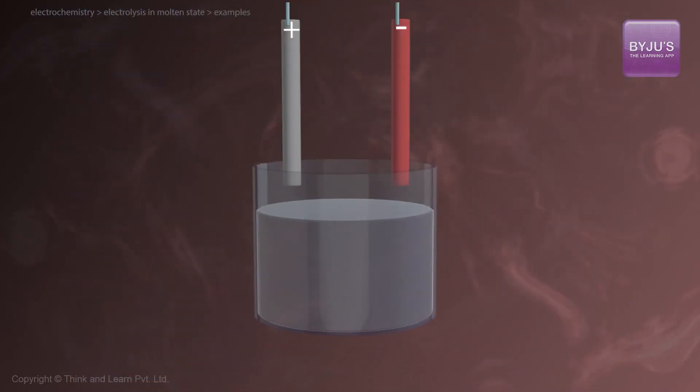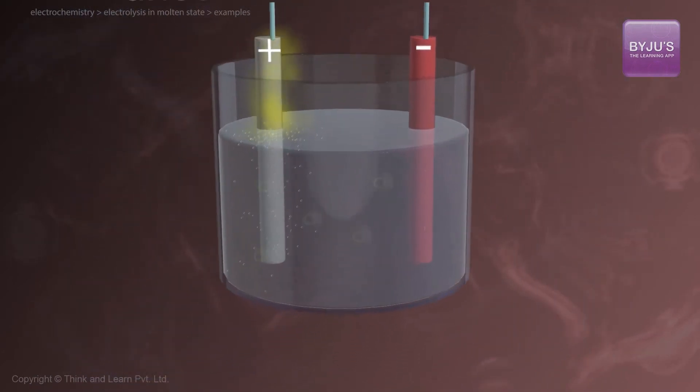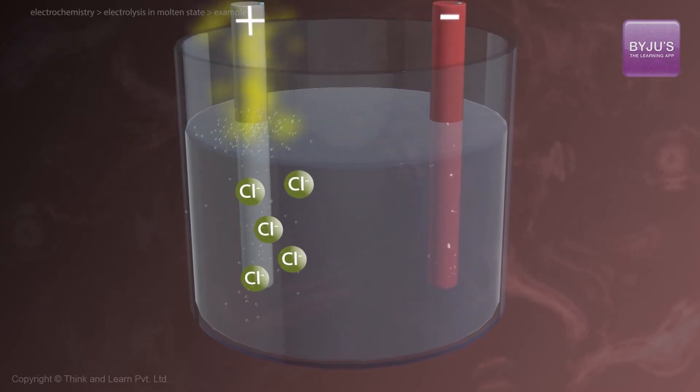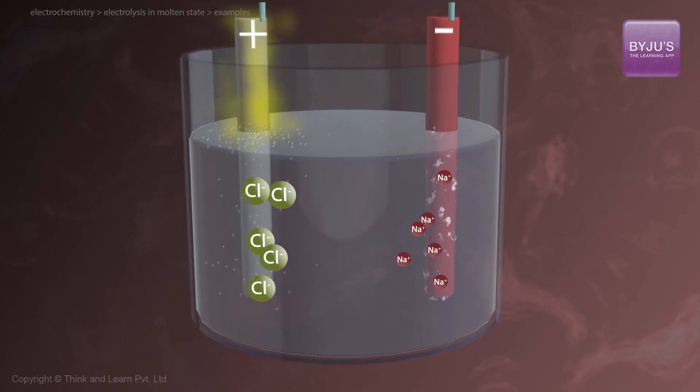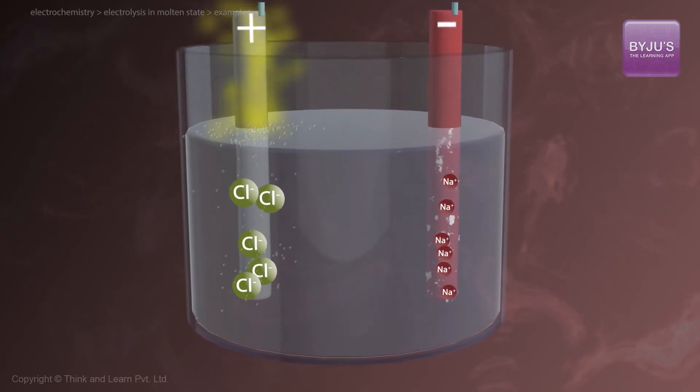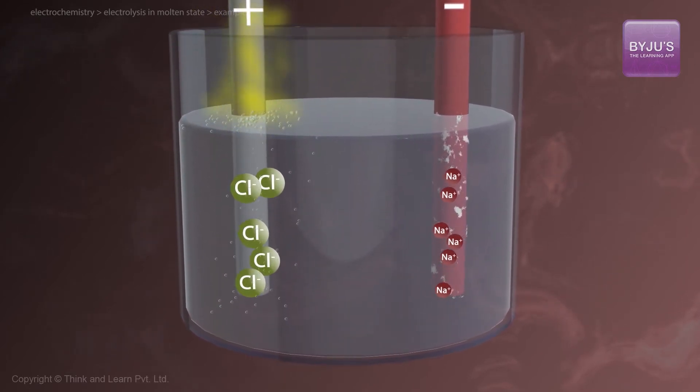As electric current is passed through the cell, Cl- ions are attracted to the anode, which is the positive electrode, and Na+ ions are attracted to the cathode, which is the negative electrode. Both ions are discharged at their respective electrodes with the following reactions.